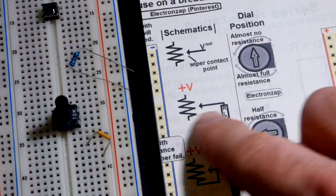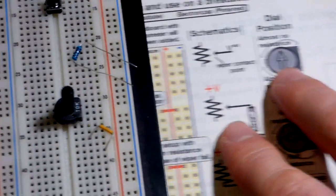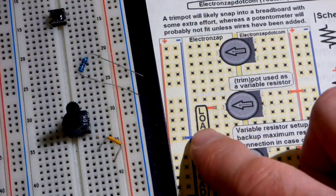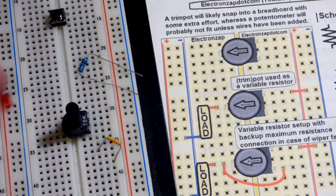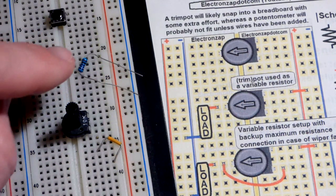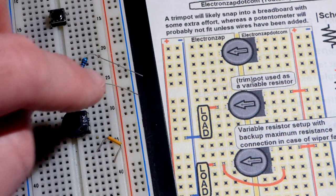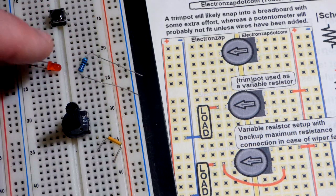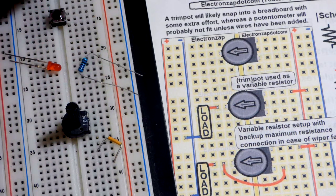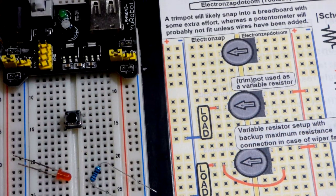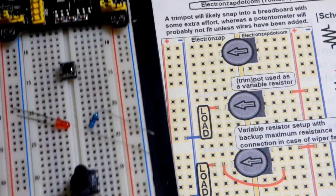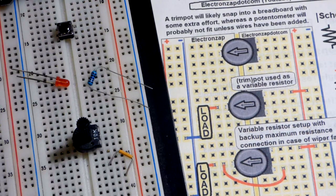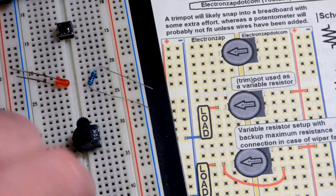And now we'll add a load. So there you can see it there. We're going to add this load, which is going to be an LED with protective resistor. Because this can go down to zero ohms of resistance, which would fry the LED. We're using a 5 volt power supply, one of these breadboard ones. And we are going to take this jumper here.